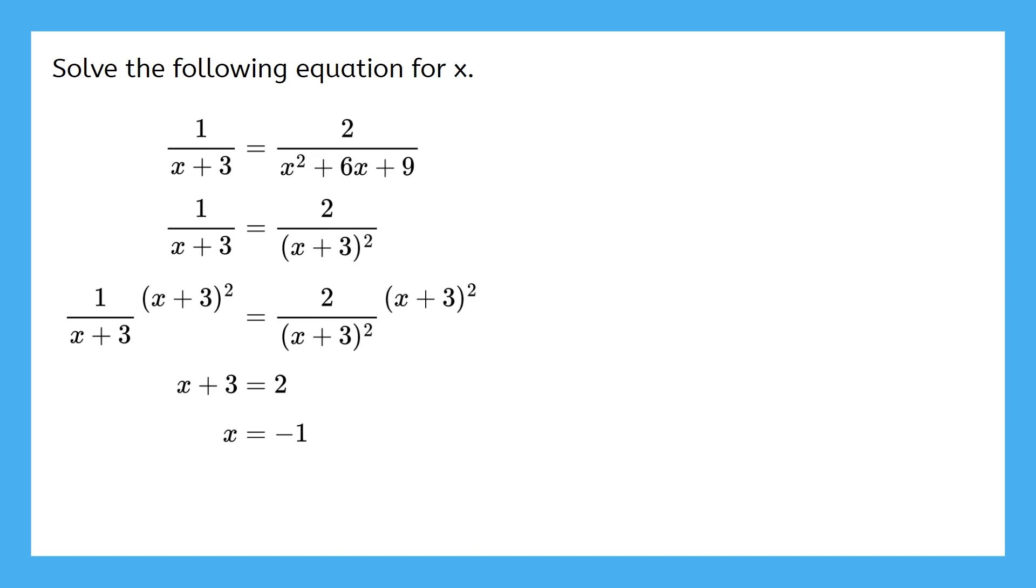Oh, actually, not quite. We just have to make sure negative 1 doesn't make any of the denominators equal to 0. We don't want to accidentally have an extraneous solution. So let's just substitute negative 1 in real quick and make sure. Okay, cool. Neither of these ends up equaling 0. So negative 1 really is the solution.